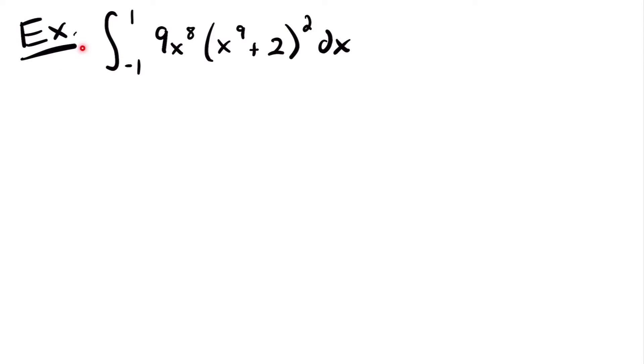Welcome back. Let's start with this example. We have the integral from negative 1 to 1 of 9x to the 8th power times the quantity x to the 9th power plus 2, squared.